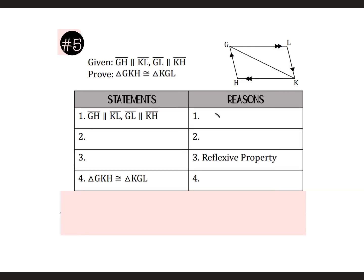For proof number five, the first reason is given and they've already marked both of those sides parallel. When we have parallel lines, we're looking for an angle pair. I'm going to start with my single-mark sides and then this transversal. I've now outlined two angles — here's the first set. Now I'm going to look at the other lines using yellow for this set. Here are my two parallels and the transversal. I've outlined two other angles. Both those sets are alternate interior angles.